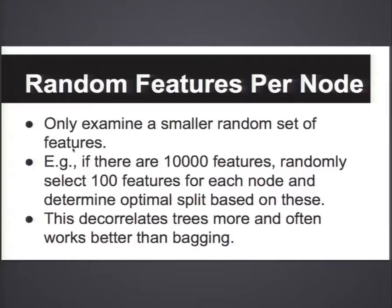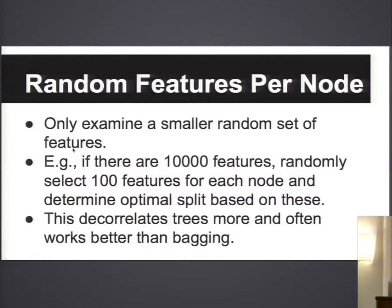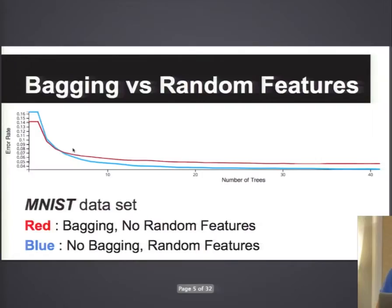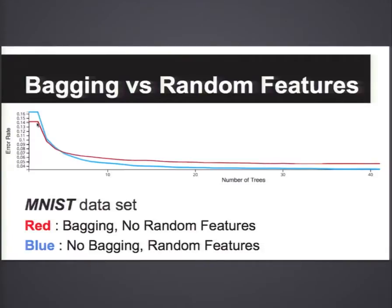There's another way to de-correlate each decision tree. When you train a decision tree, typically you look at all the features and select the feature that gives you the optimal split. But for random forests, you select a random subset of the features. For instance, if you have 10,000 features, instead of looking at all 10,000, when you're trying to split a node, you look at only about 100 features randomly and split based on that. It turns out this usually works even better than bagging.